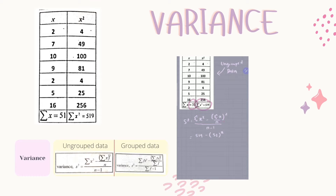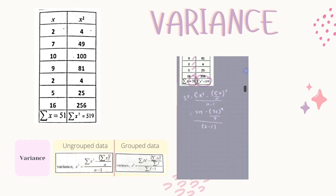For N, N is the total number of intervals — 1, 2, 3, 4, 5, 6, 7 — so N is 7. After substituting all the values into the equation, we calculate and the final answer for variance is 24.5714.